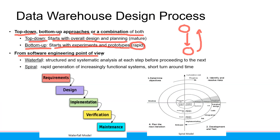We can also look at the software engineering point of view. If you are in the engineering department, you will see design processes like waterfall or spiral. The waterfall means a structured and systematic analysis at each step before proceeding to the next. For example, when you develop software, you check requirements, then design, then implement, then verify, then do maintenance — step by step. That is why we call it waterfall.